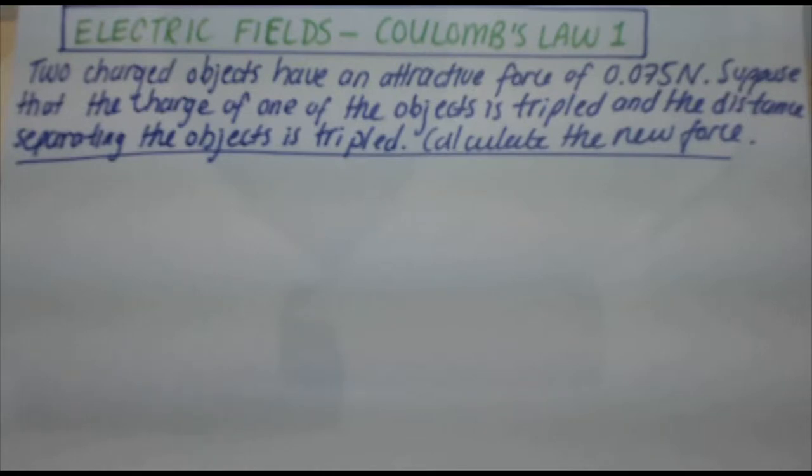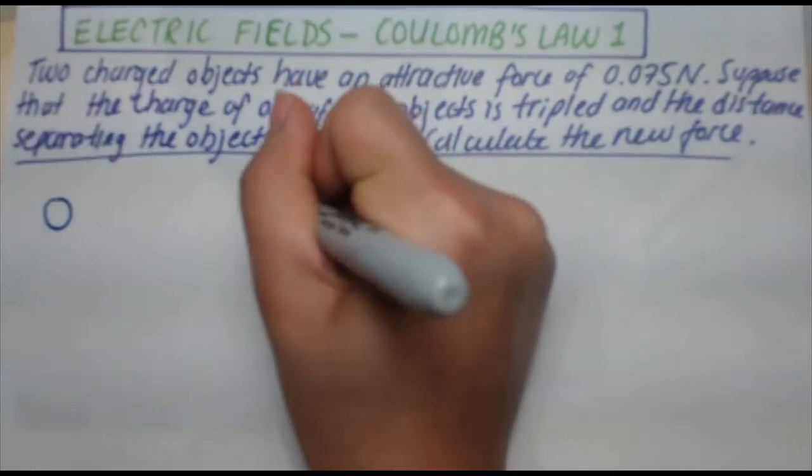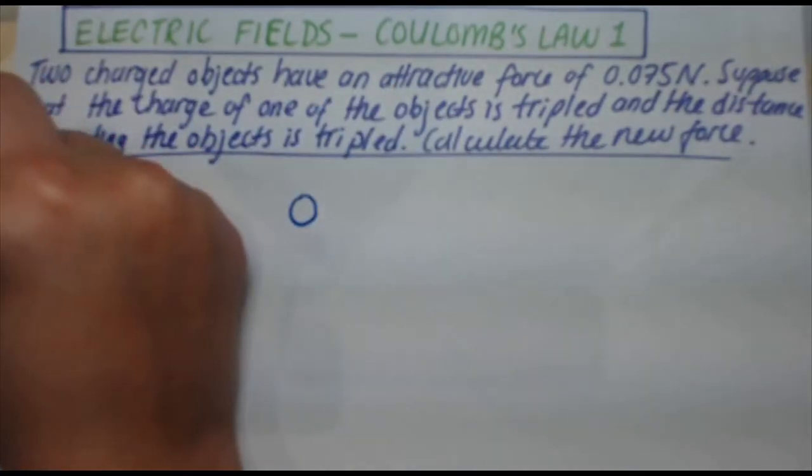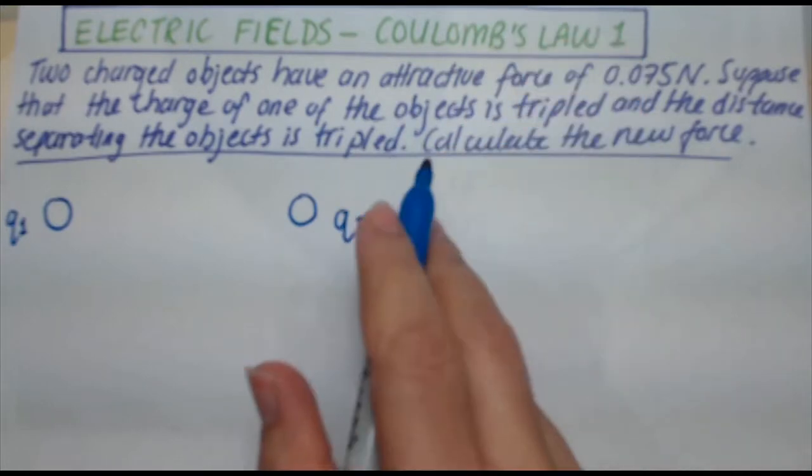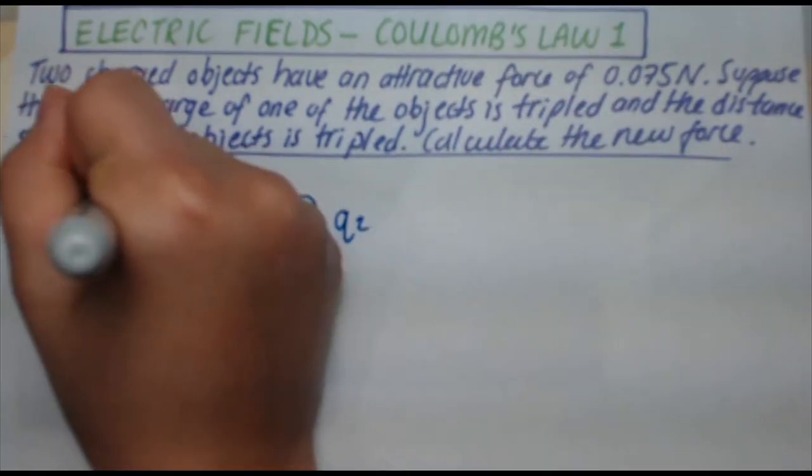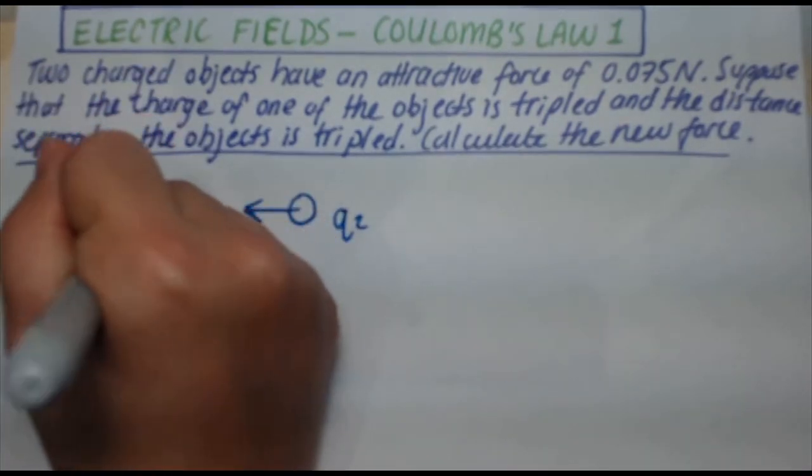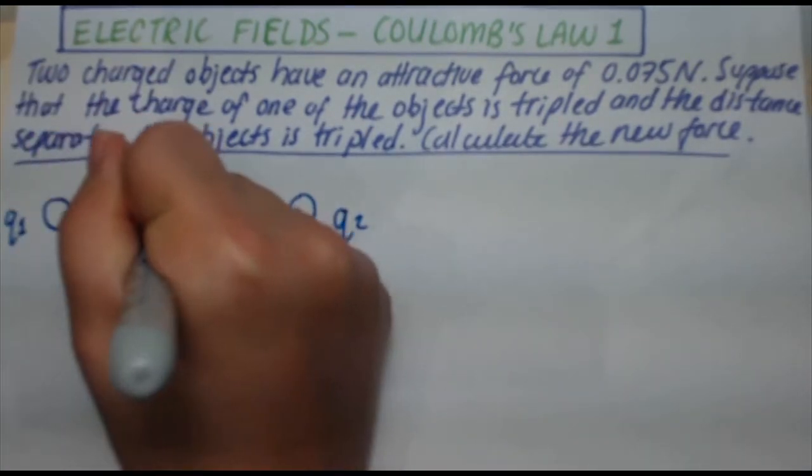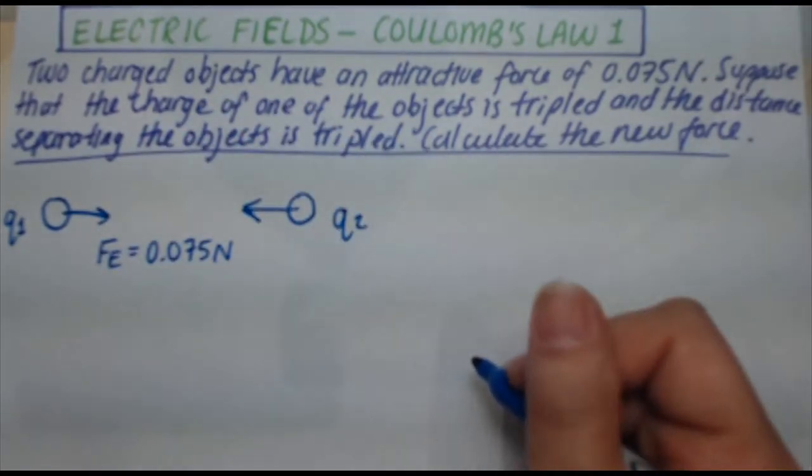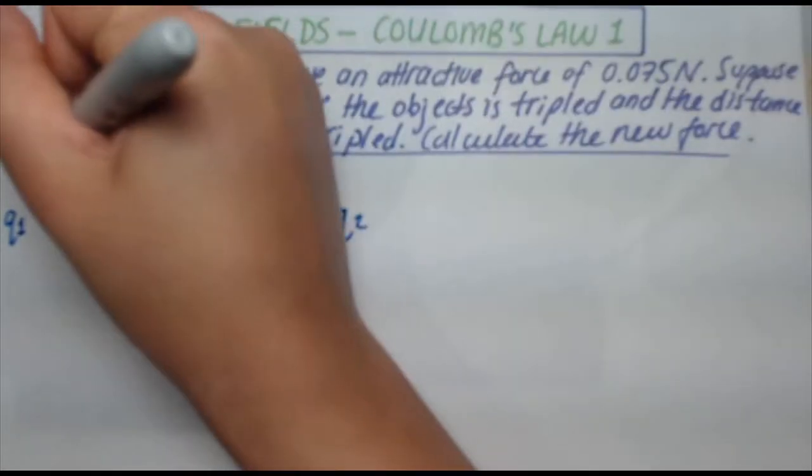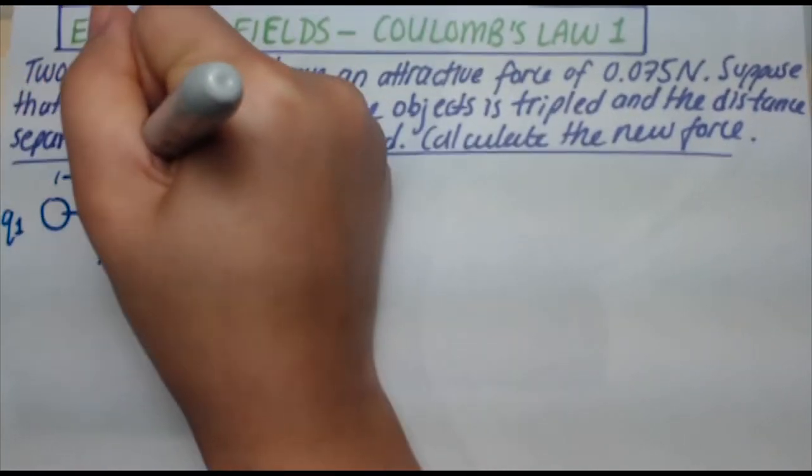Let's draw a picture to start off this problem. We've got two charges, Q1 and Q2, and they're feeling an attractive force, so we can draw attractive force arrows going towards each other. This attractive electric force has a magnitude of 0.075 newtons. The distance between the two objects, we'll call R.